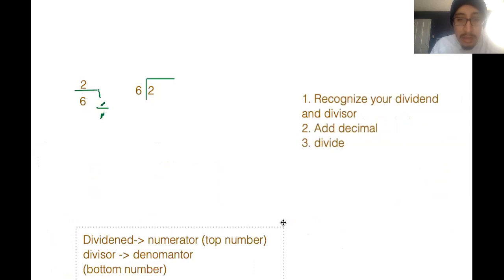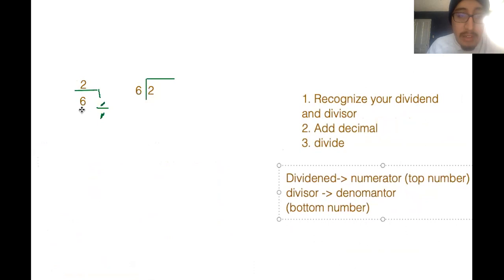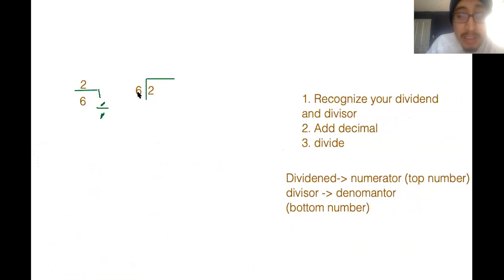Here's a space to do our work. So again, two is getting divided by six. You always got to read it like that — it's like a regular division problem. So now we have to divide. First things first, we have to look: can six go into two? Let's first do our multiplications.